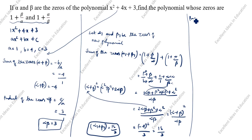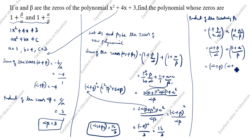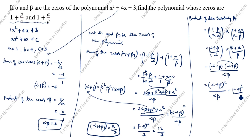Next, the product of the zeros. Alpha 1 times beta 1 equals 1 plus beta by alpha into 1 plus alpha by beta. This simplifies to alpha plus beta by alpha into beta plus alpha by beta, which equals alpha plus beta, the whole square, divided by alpha beta. Substituting: minus 4 squared divided by 3 equals 16 by 3. So alpha 1 beta 1 equals 16 by 3.